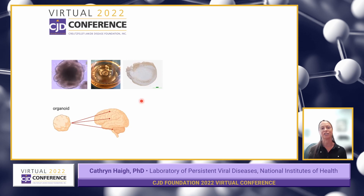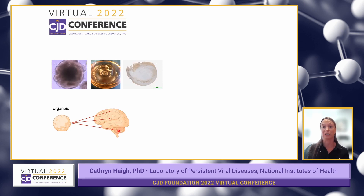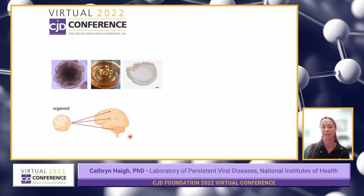Since we did this, organoid technology has actually improved immensely. Now we don't just make these organoids indiscriminately — we can make them correspond to different parts of the brain, which allows us to look at those different subtypes, those different shapes, and how they attack the different regions. And that is what we propose to do here.